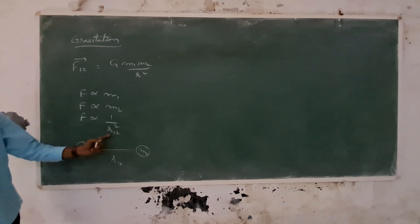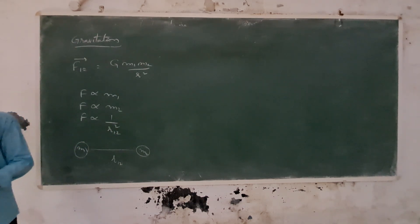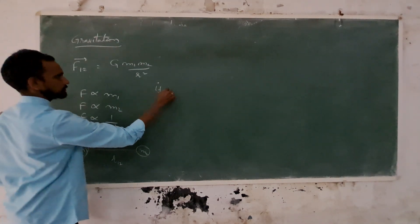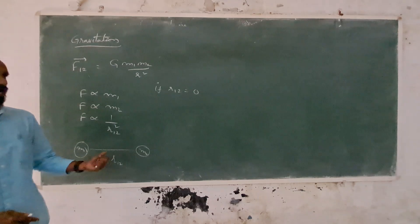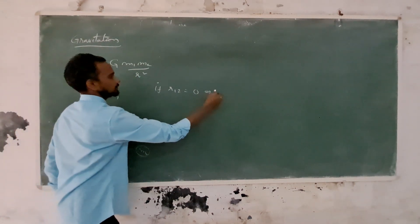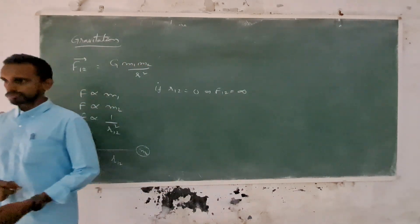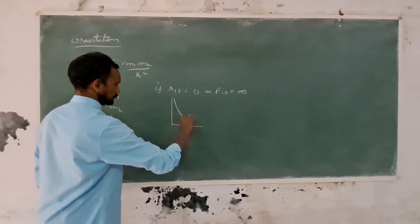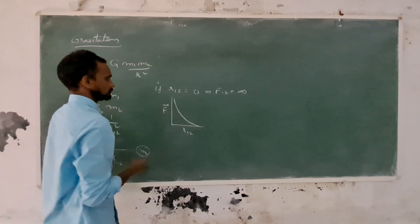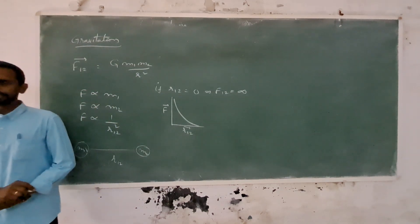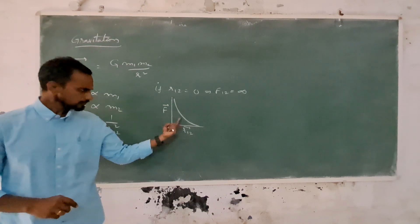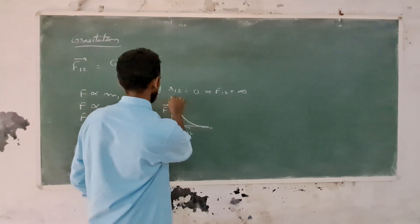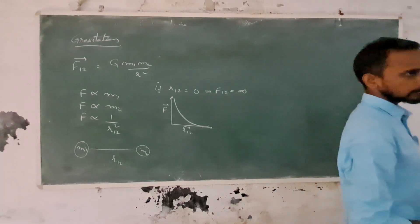If the distance is zero, then the separation between the two objects is zero and the force will be very large. It is a very large force. But as the distance separation increases, after a certain distance, the force becomes negligible — very small values.